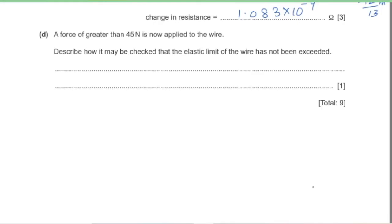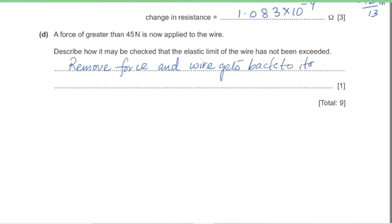A force greater than 45 N is applied. Describe how to check that the elastic limit has not been exceeded. Remove the force and check if the wire returns to its original length. If it has exceeded the elastic limit, the wire will deform permanently and will not return to its original position.